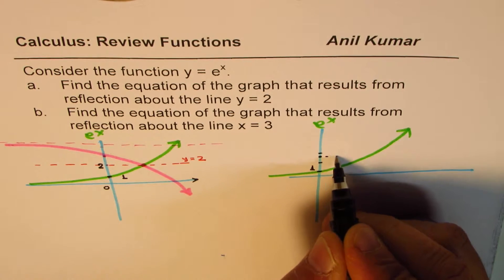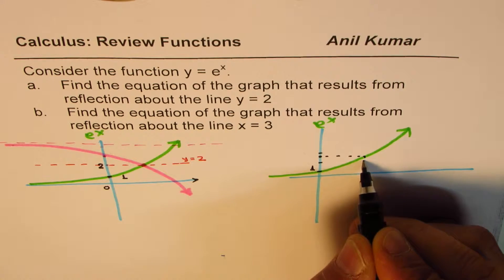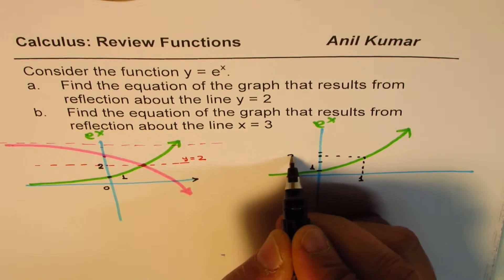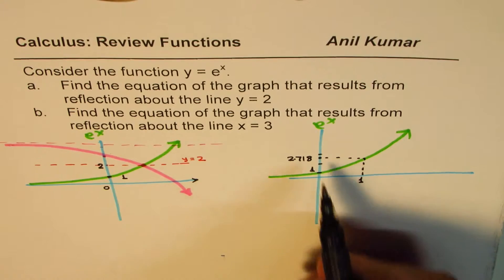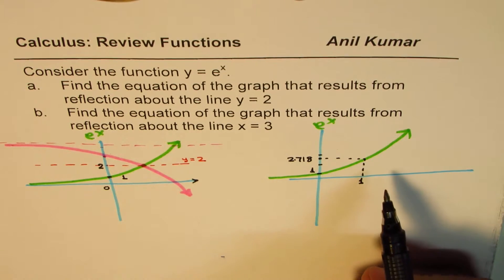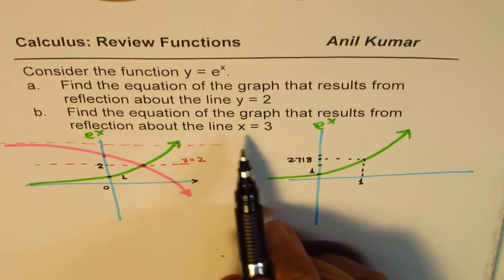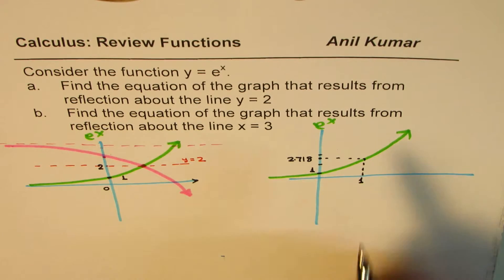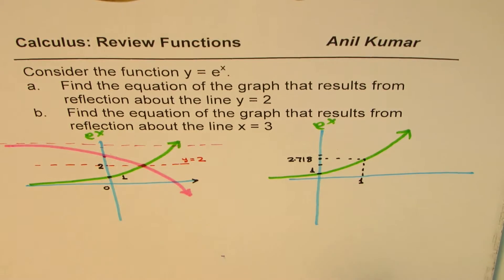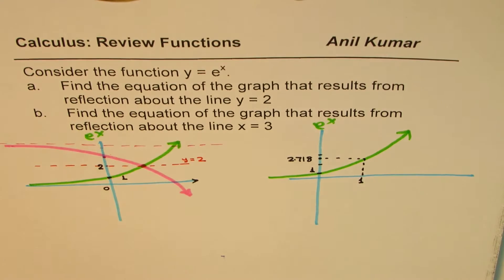When x is 1, so just 2.718, approximately. It's an important number to work with. We are saying x equals 3. That means 3 is far away, kind of here. I shouldn't have taken that far away, this point, anyway. So what I will do here is think about this.